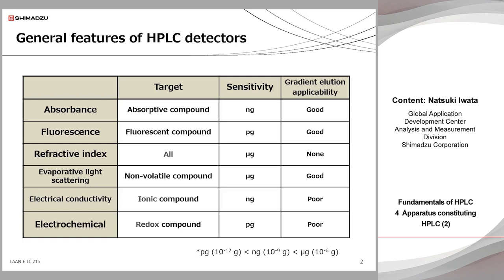Compounds having conjugated double bonds or aromatic rings show high response on the absorbance detector. In general, selective detectors, which can be applied to limited target compounds, tend to show high sensitivity. Some UV absorbance compounds provide luminescence phenomena at particular wavelengths, and they are detected by a fluorescence detector that affords generally higher sensitivity than that of the UV detector. On the other hand, a refractive index detector — so-called RID — has wide versatility, covering saturated hydrocarbons and saccharides that have no UV absorption. Generally, the sensitivity of RID affords rather worse sensitivity compared to that of the UV detector. Furthermore, it cannot be employed with gradient elution due to large baseline drifting caused by varying mobile phase composition during analysis.